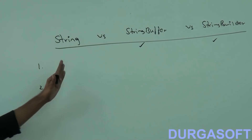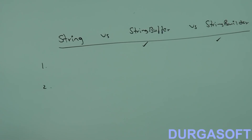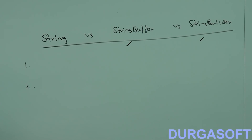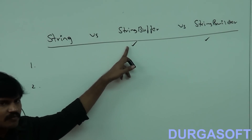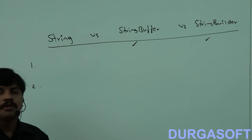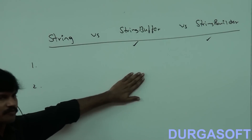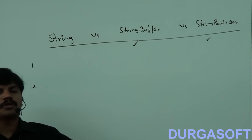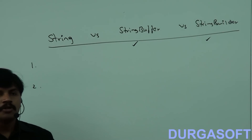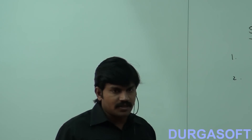To summarize: when we should go for String, StringBuffer, or StringBuilder — if the content is fixed and won't change frequently, go for String. If the content is not fixed and keeps changing but thread safety is required, go for StringBuffer. If the content is not fixed and mutability is required but thread safety is not needed, with multiple threads allowed to operate, go for StringBuilder.